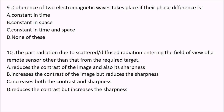Next: coherence of two electromagnetic waves takes place if their phase shift is constant in time, constant in space, or constant in time and space. The answer is C — it should be constant in both time and space.